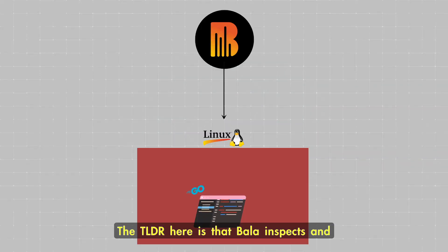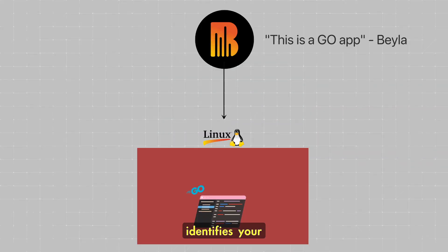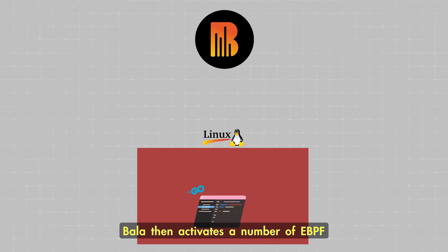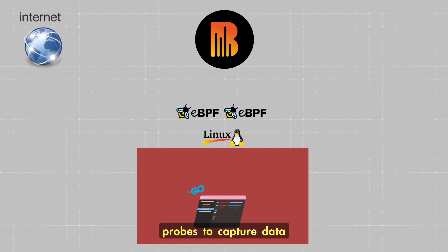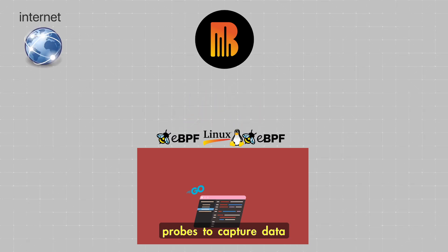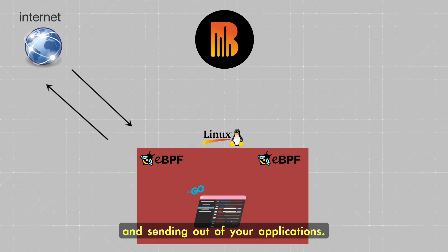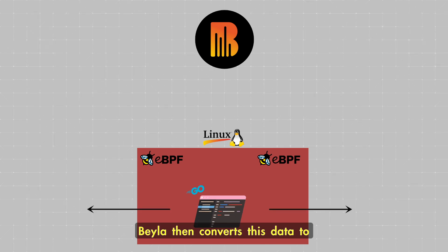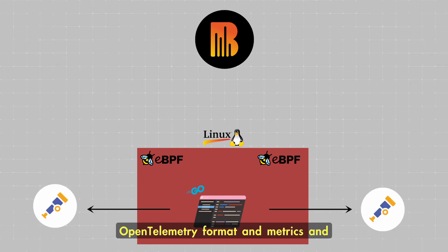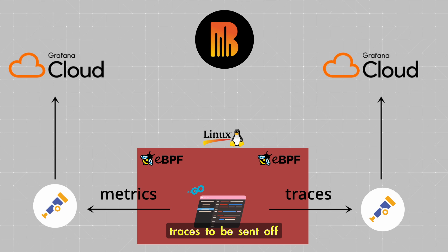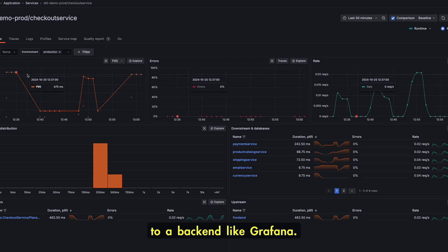The TLDR here is that Beyla inspects and identifies your applications running on Linux. Beyla then activates a number of eBPF probes to capture data about the traffic being received and sent out of your applications. Beyla then converts this data to OpenTelemetry format — metrics and traces — to be sent off to a backend like Grafana.